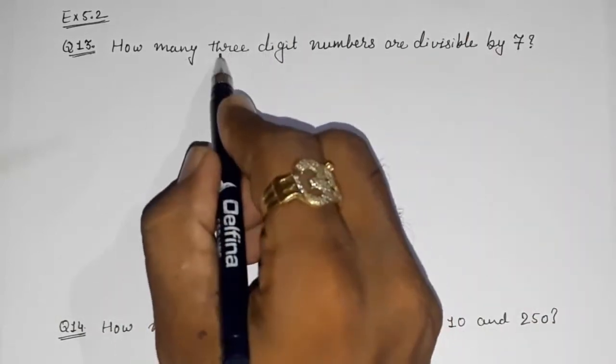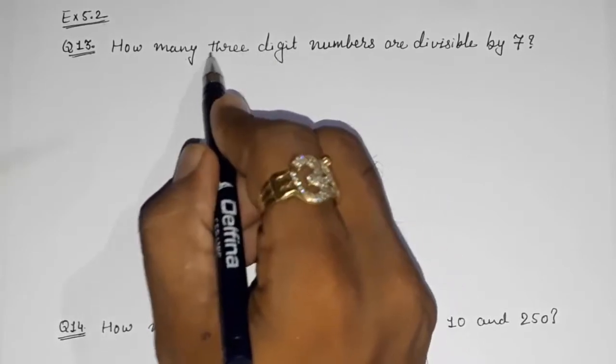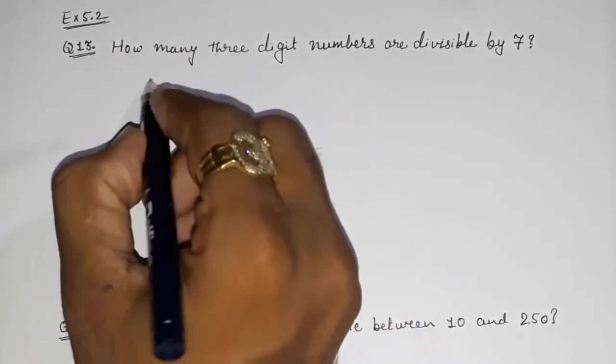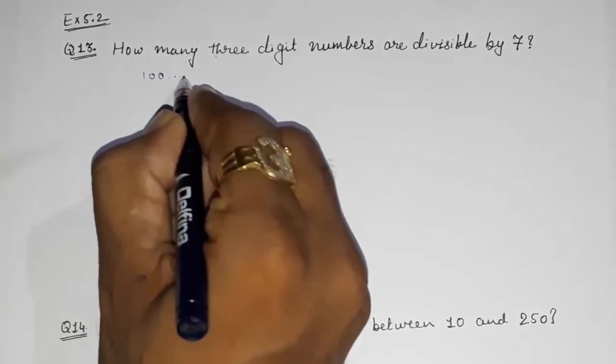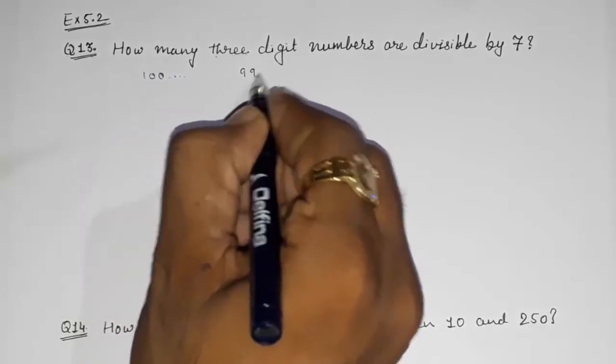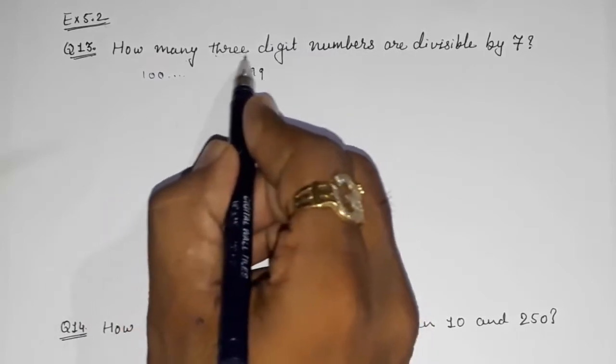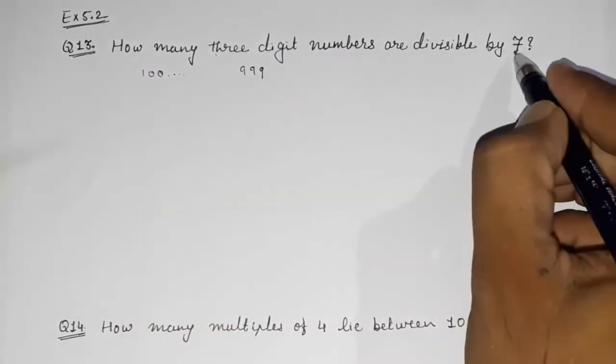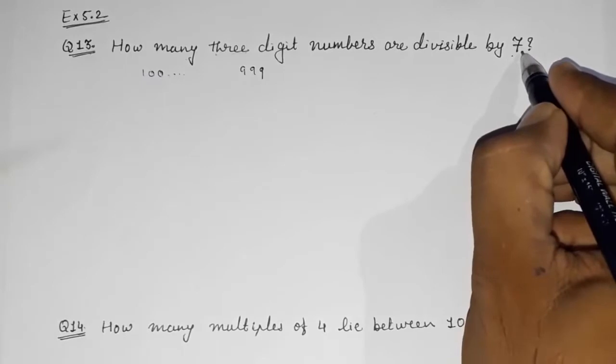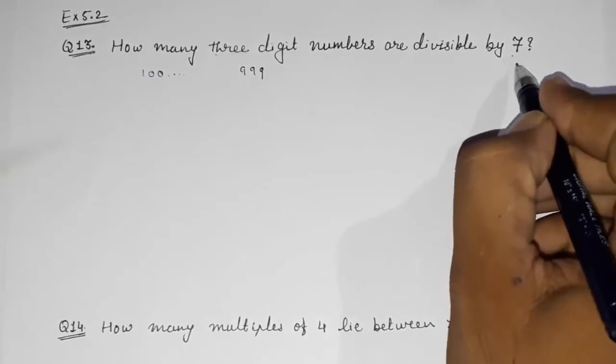So first you should know what 3-digit numbers are. It starts with 100 and ends with 999. So these are all 3-digit numbers. Out of all these 3-digit numbers, we want to find out the numbers which are divisible by 7.